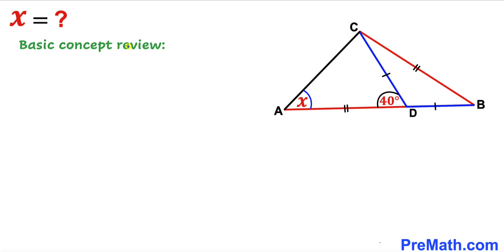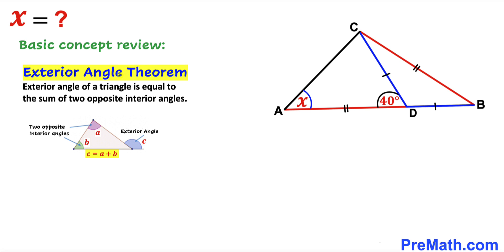Before we proceed any further let me go over the basic concepts. Here's our very first concept: the exterior angle theorem. The exterior angle of a triangle is equal to the sum of the two opposite interior angles, as you can see in this given diagram. Here we have this exterior angle C and that is going to be equal to the sum of these two opposite interior angles A and B.